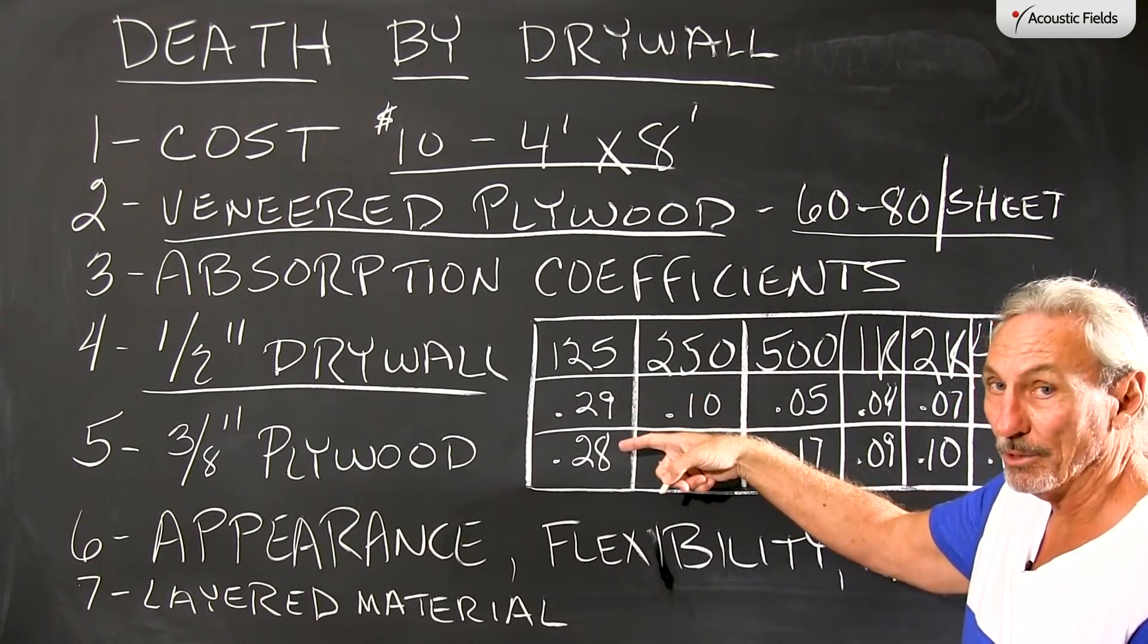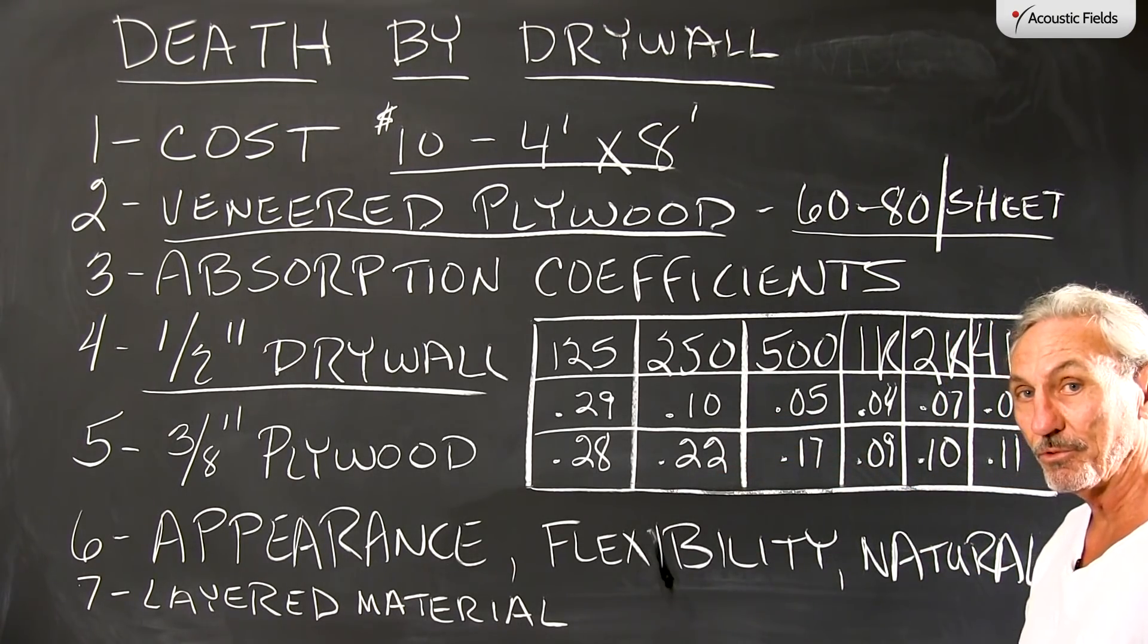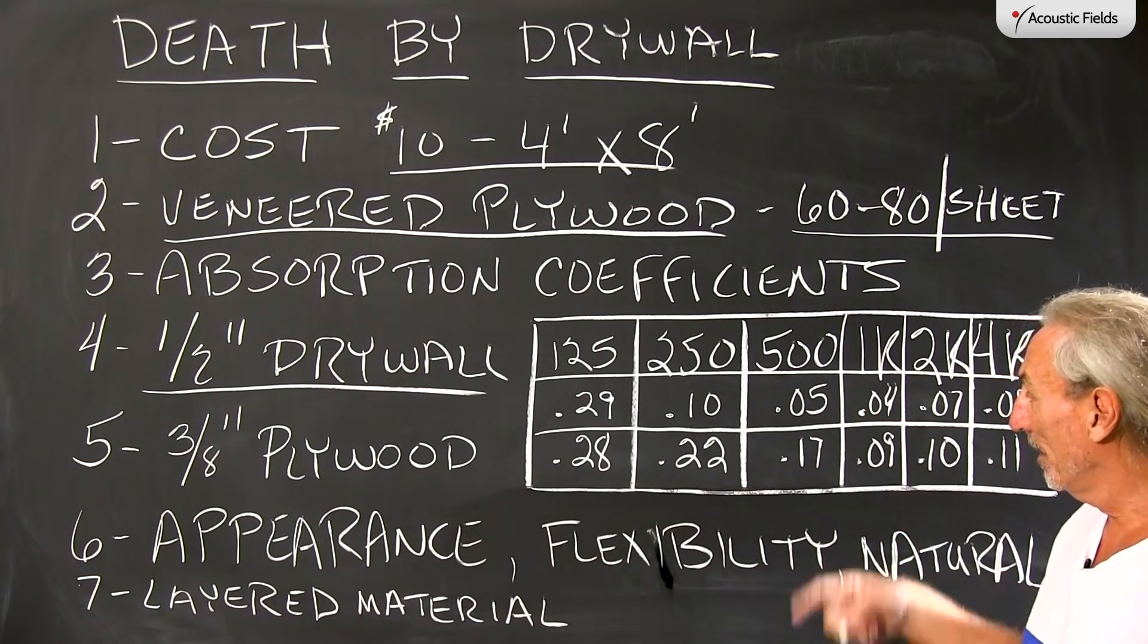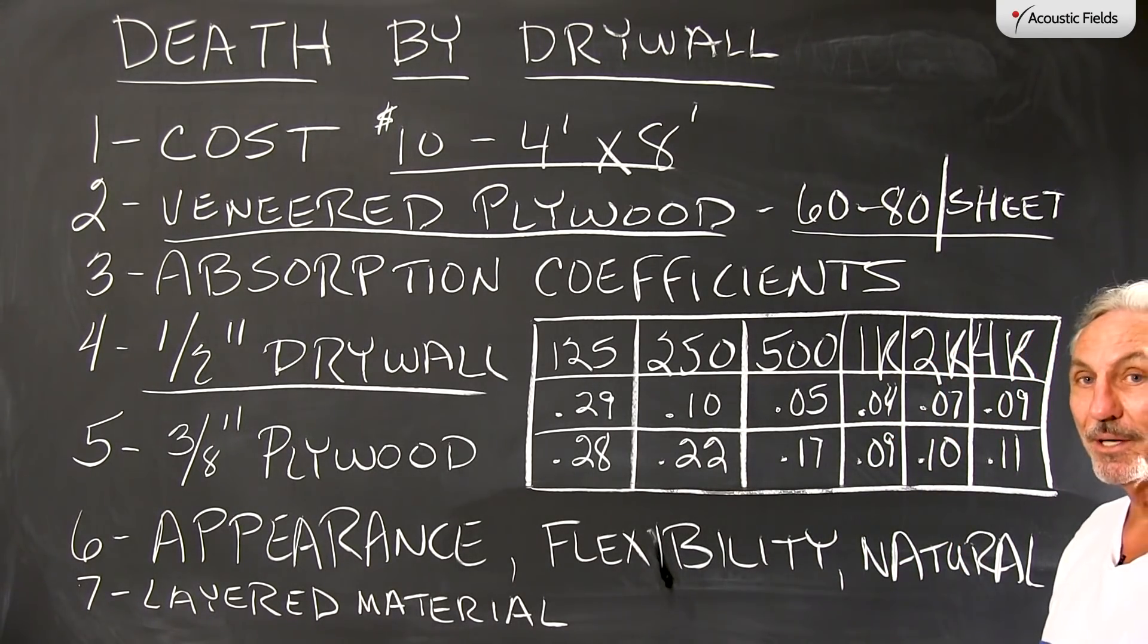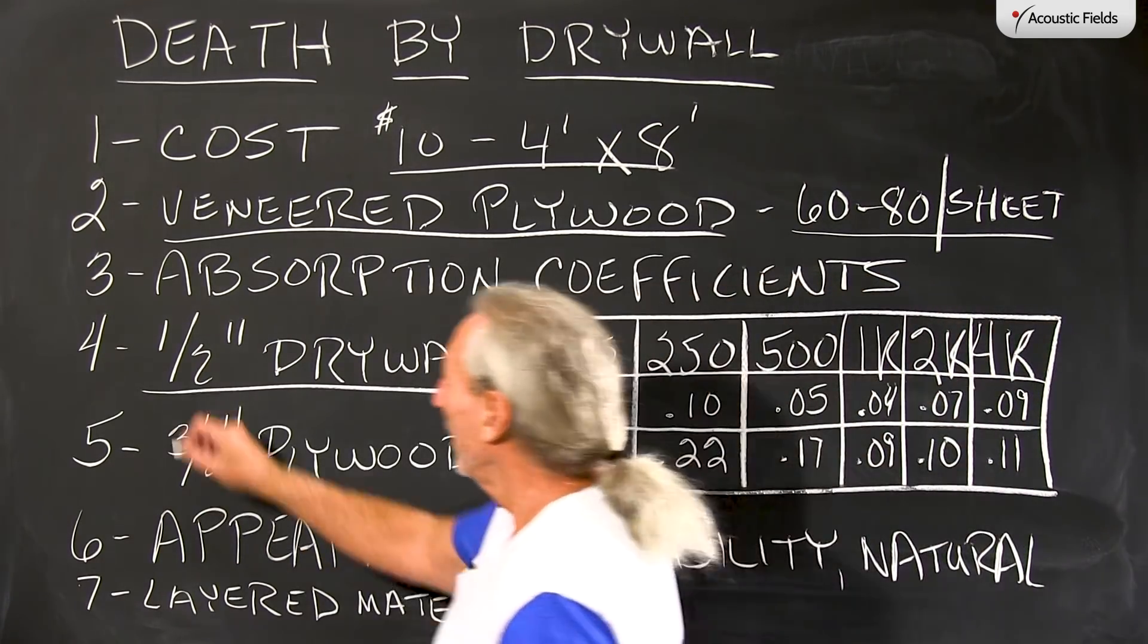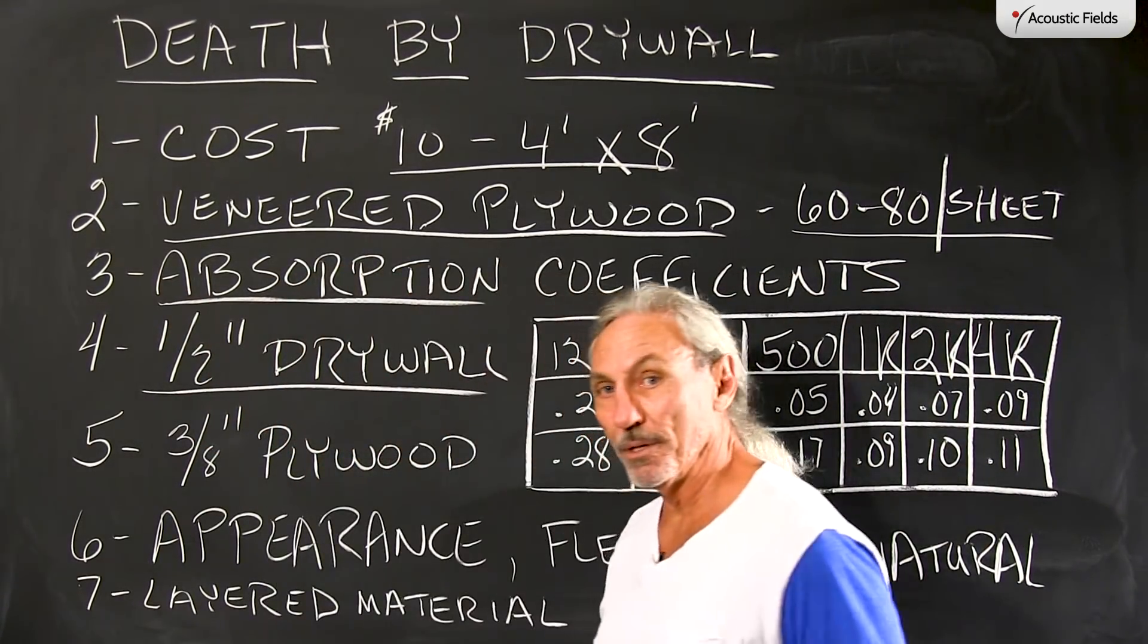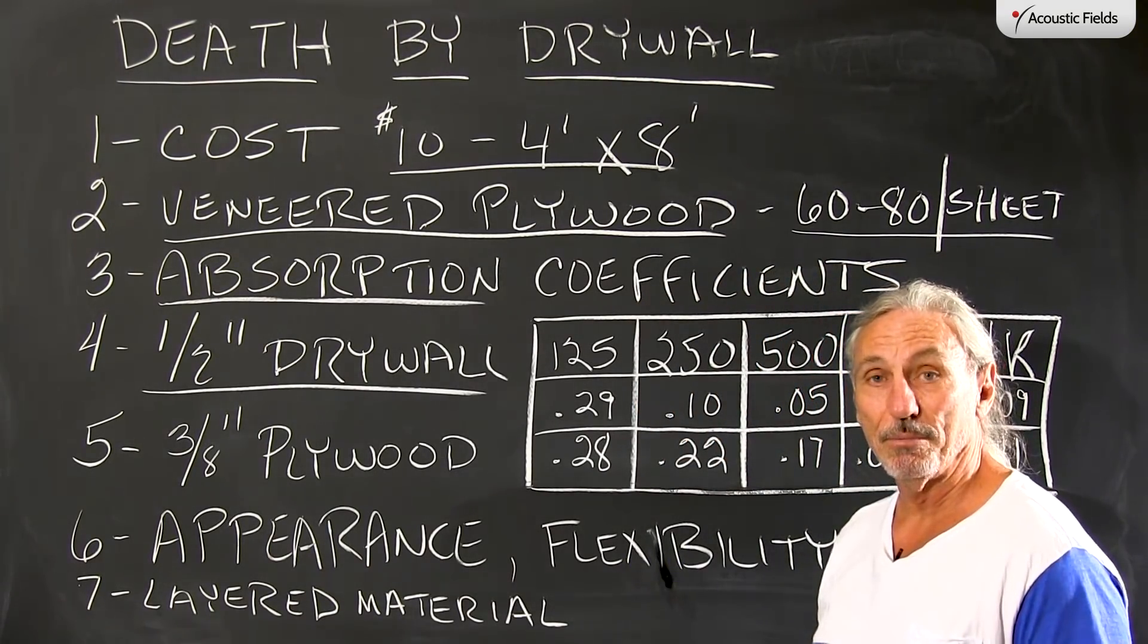125 almost the same, 250 plywood's actually a little bit stronger in the absorption, 500 pretty close, 1K, 2K and 4K there's hardly any difference. So the argument that drywall is a better sound absorption material from 125 to 4K, simply not true.